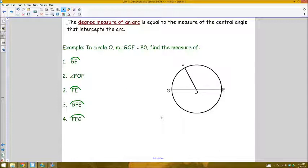What that means is if I have a central angle such as in circle O angle GOF, this right here is 80 degrees.